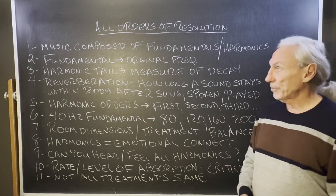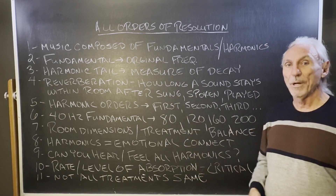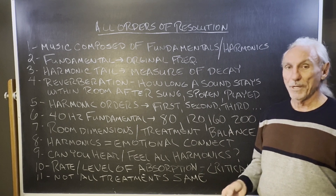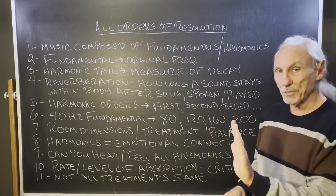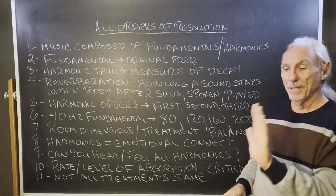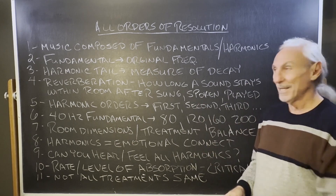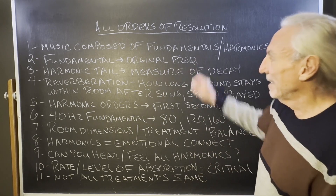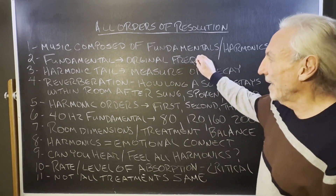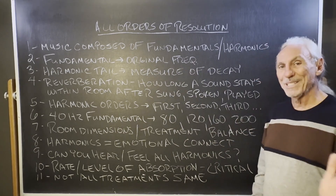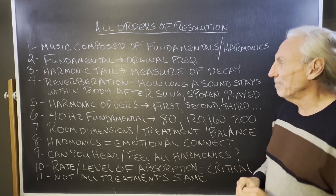Today we're going to talk about all orders of resolution. We know that music is composed of fundamentals and harmonics. Think of a kick drum — when the drummer hits the pedal and the mallet strikes the kick drum, that produces the fundamental. The kick drum vibrates, sends that energy out into the room, and then it decays. The decay is a variance from the original frequency, so that's the original, and the harmonic is that tail — that measure of decay. And that's where resolution is important.